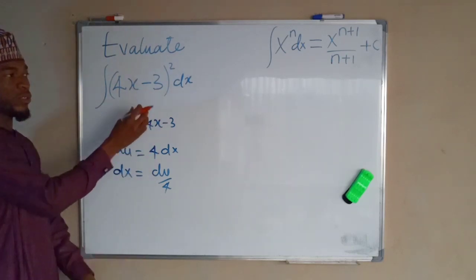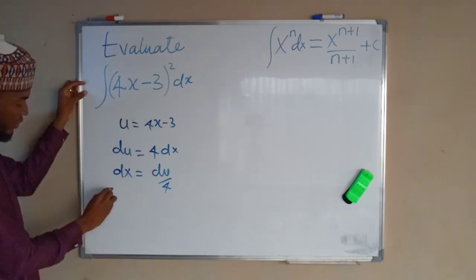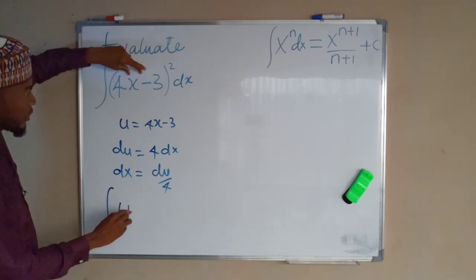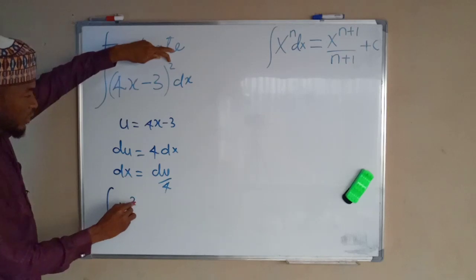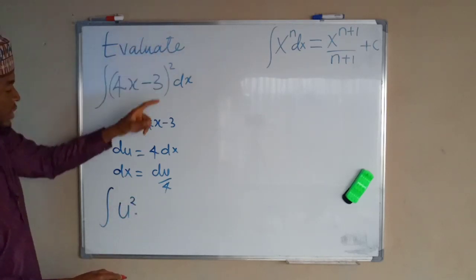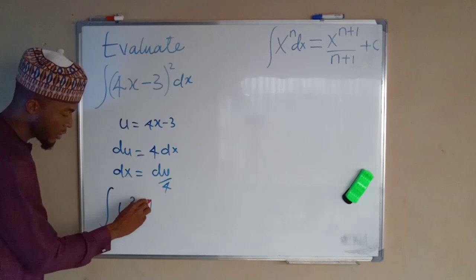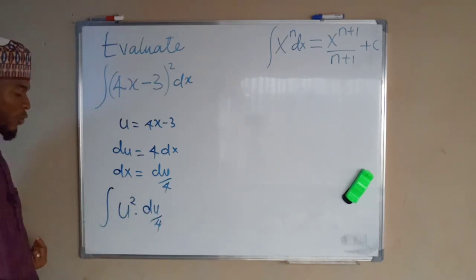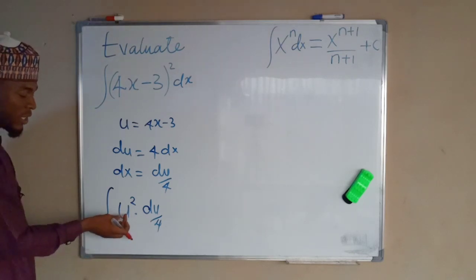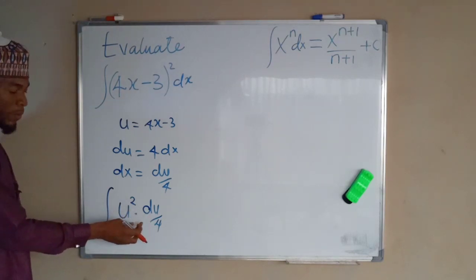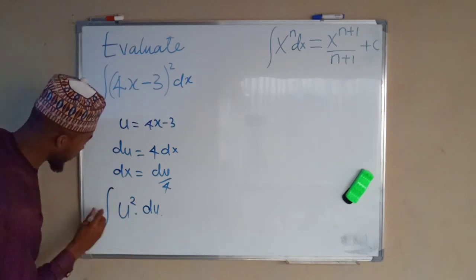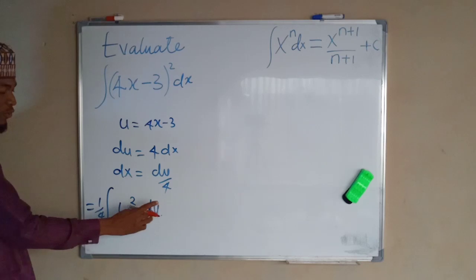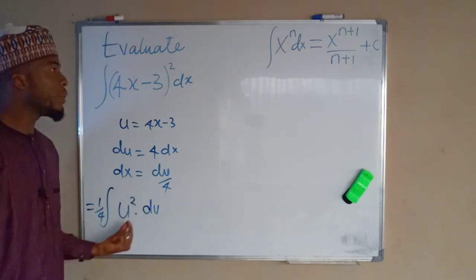Let us substitute this into the main integral function. We have already substituted the inner expression with u, so we have u to the power of 2 multiplied by dx, and dx is now equal to du over 4. We can factor out 1 over 4 so that we have only u squared du.